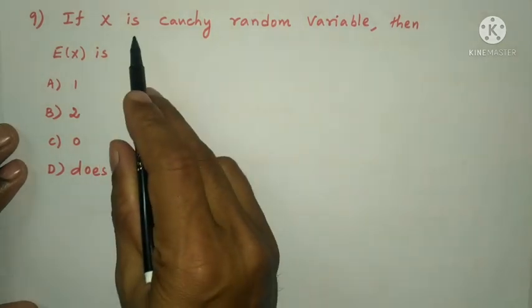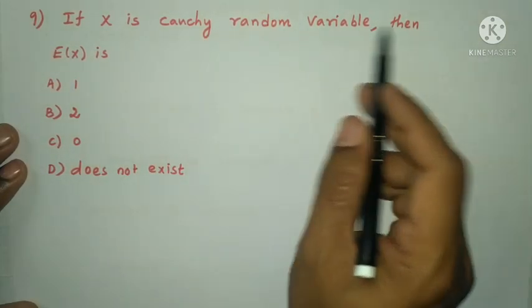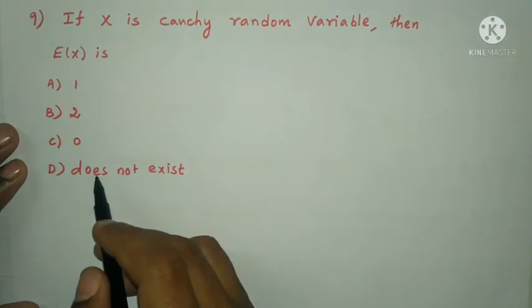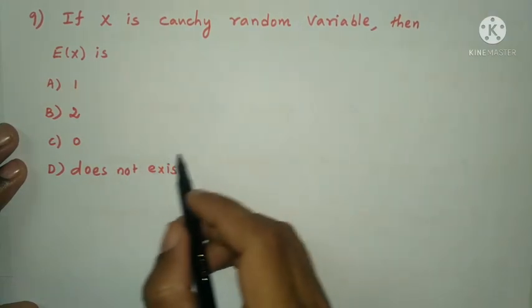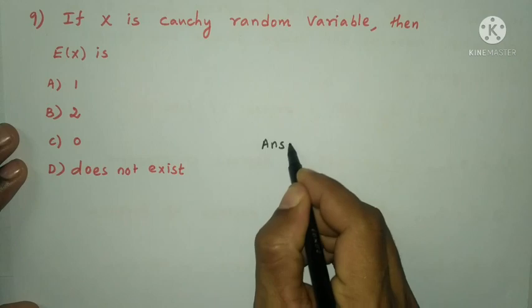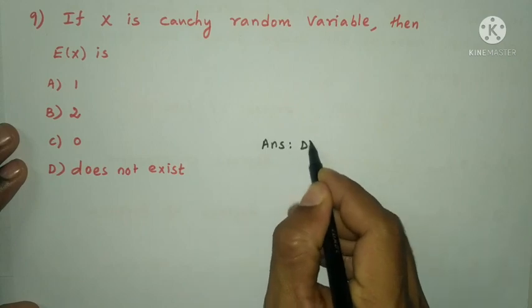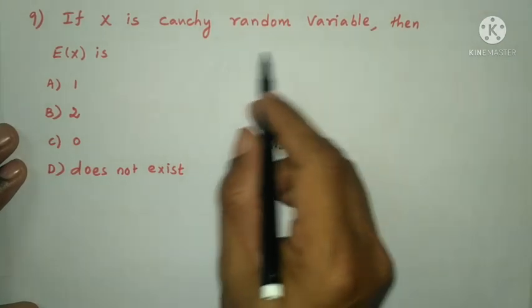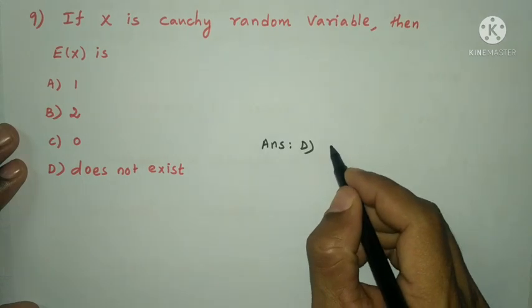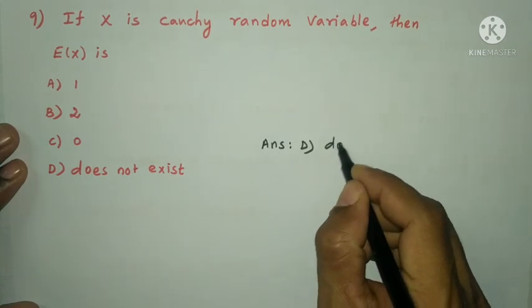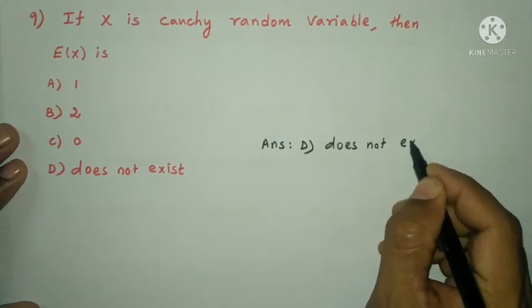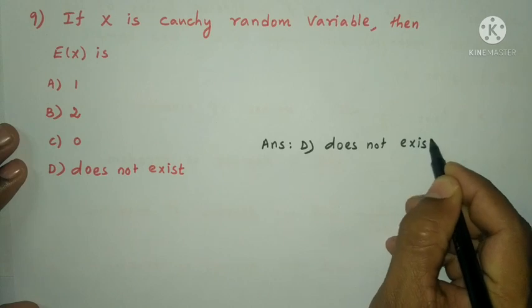Next question: if X is a Cauchy random variable, then E(X) is? For a Cauchy random variable, E(X) does not exist. The answer is option D.